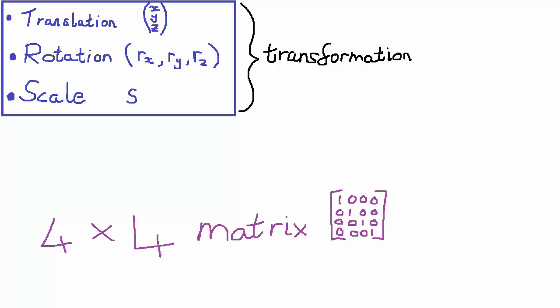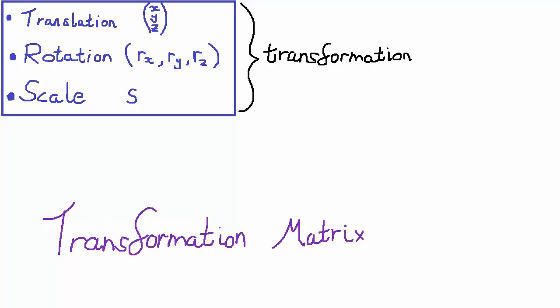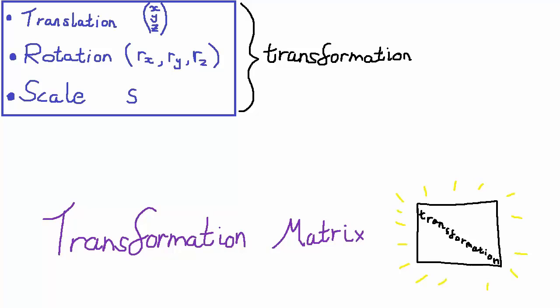If you don't know how matrices work, it's not too much of a problem — there are links in the description. A 4x4 matrix has 4 rows and 4 columns of numbers. You don't need to know what each of the 16 numbers means; you can think of it as a magic box that contains a transformation. What we do need to know is how to convert from translation, rotation, and scale into a transformation matrix, which I'll show in the code now.